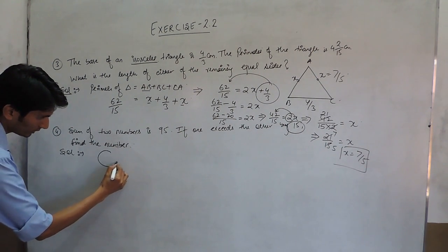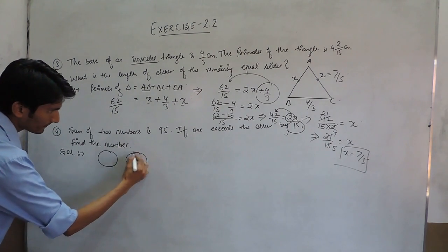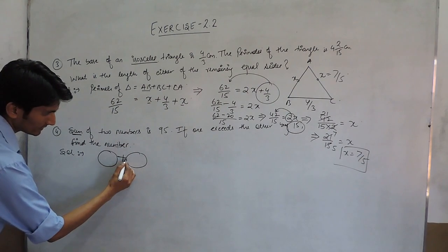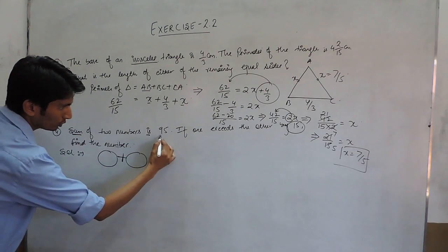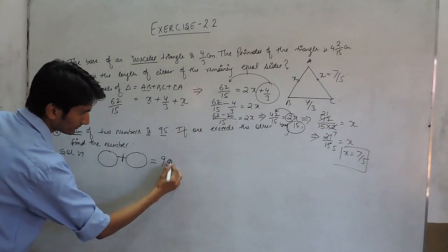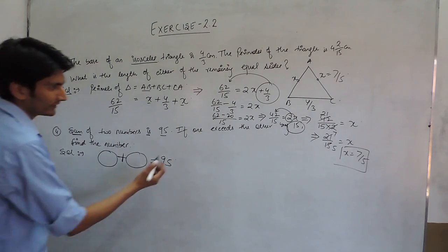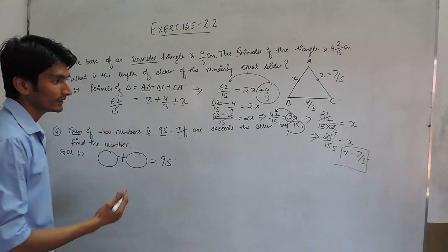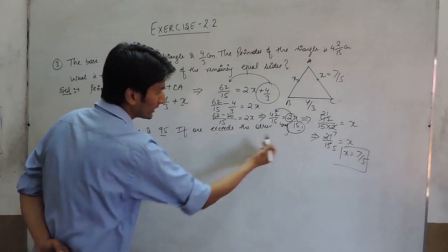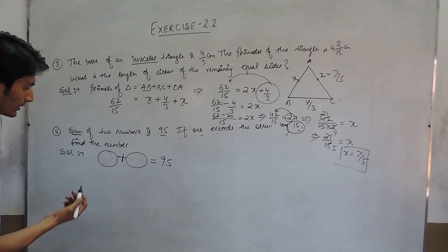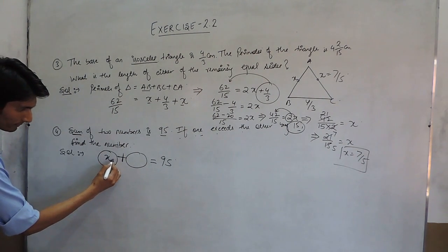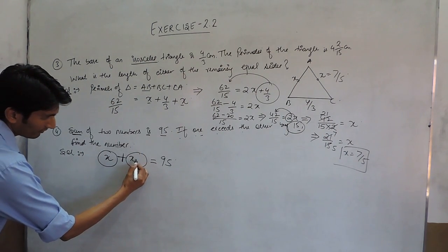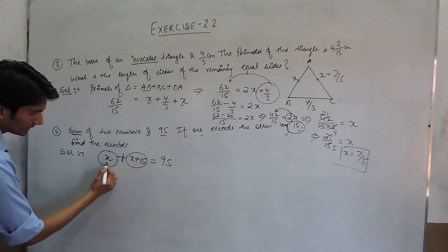Here it is given that there are two numbers whose sum means whose addition equals 95. And it is given that if one number exceeds the other by 15 means the other number is 15 more than the previous number. So, assuming the previous number as X, so the next number should be 15 more than this number.